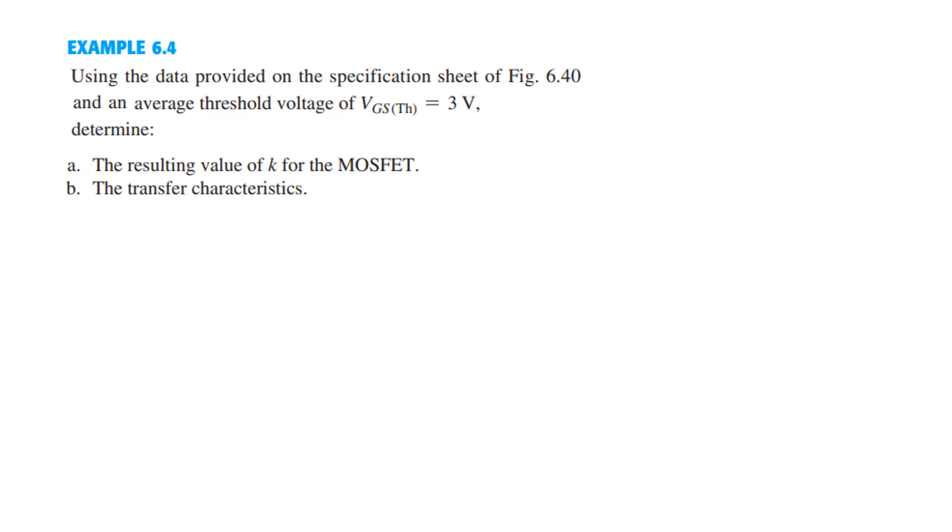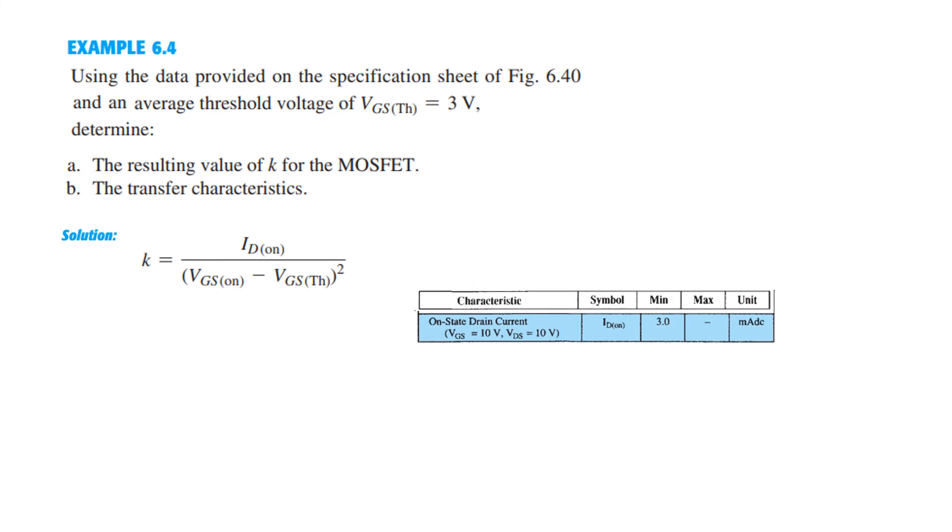And we will see now with the help of our example, we will clarify our concept more. So using the data provided on the specification sheet, the average threshold voltage is 3 volts. Determine the value of K and also draw the transfer characteristics. So first, we know this was the formula for K. Now for this particular device we have to find ID(on) and VGS(on) from the specification sheet. So from the specification sheet we can see that for VGS=10, the current is 3 milliamperes. So 3 milliamperes here and 10 here, and V threshold already given 3 volts. So plugging in the values, this is the value of K.